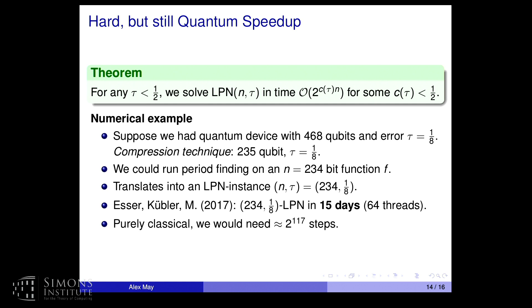For instance, BKW and related algorithms can solve LPN in time 2^(C(tau) * n) where C(tau) < 1/2 for every tau < 1/2. This means you still get a speedup compared to the purely classical lower bound of 2^(n/2). So your quantum computer helps you even if it is faulty — the speedup is polynomial rather than exponential, but it is still a genuine speedup.